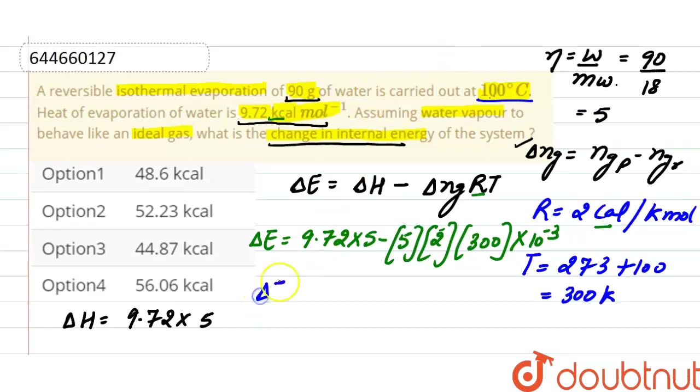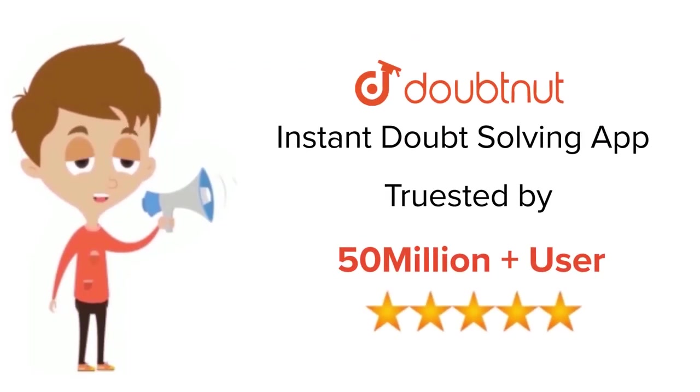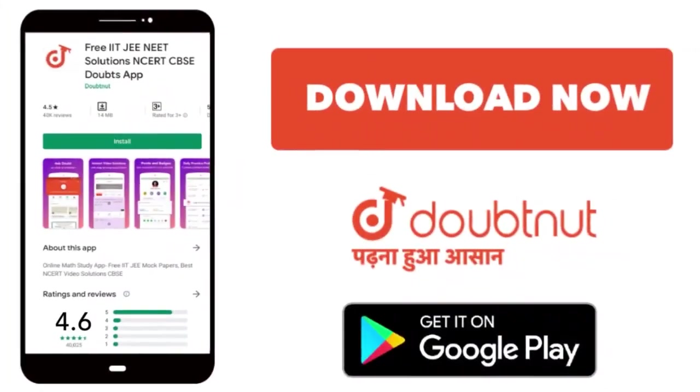And the correct option here will be option 3. For class 6 to 12, IIT-JEE, and NEET level, trusted by more than 5 crore students, download Doubtnet today.